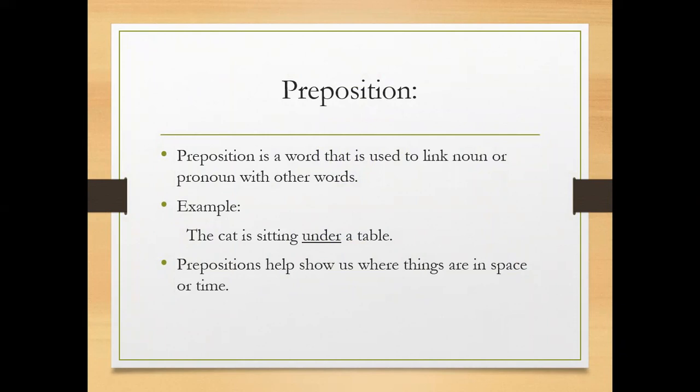In this sentence you have seen that I've underlined the word 'under.' This is a preposition and it is joining the noun 'cat' with the object 'table.' Just imagine that without 'under,' how the sentence will sound: 'the cat is sitting a table.' It doesn't sound well, so it is a must to use a preposition over here.